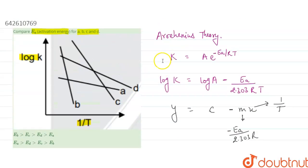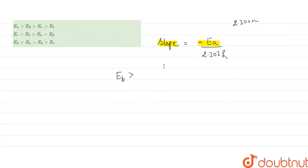The slope of C will be less, so the activation energy in C will be more. So comes Ec.